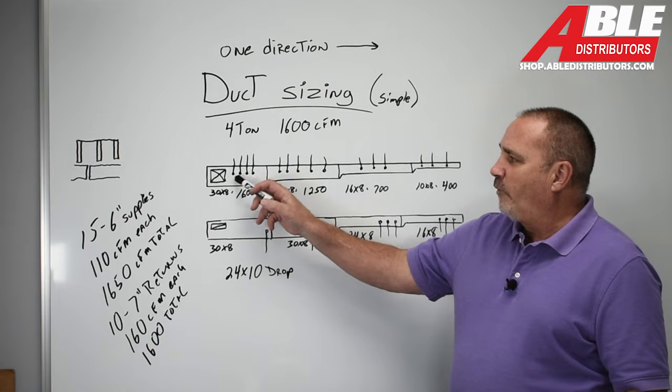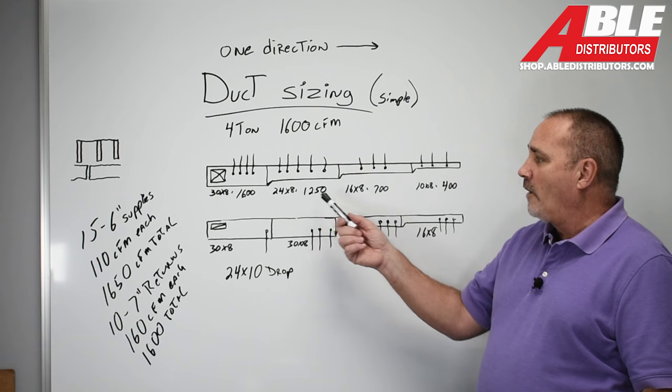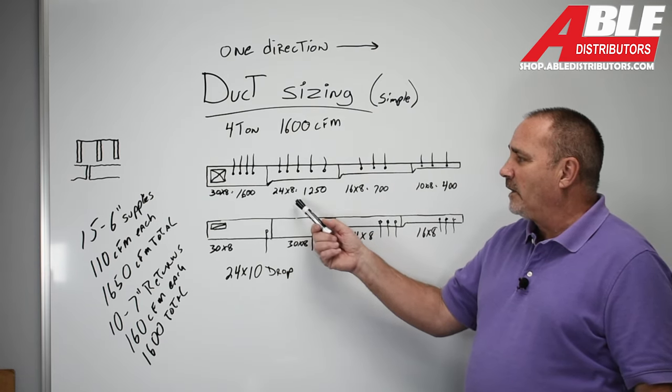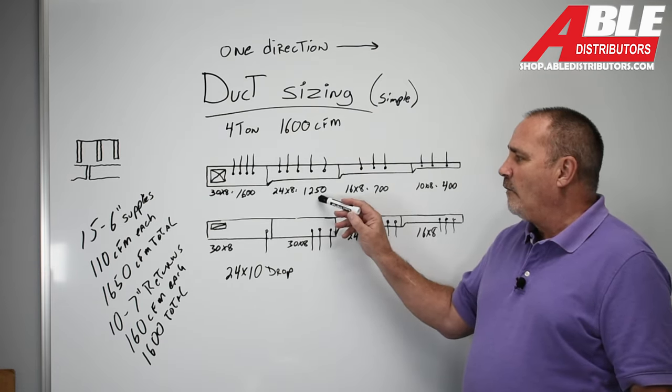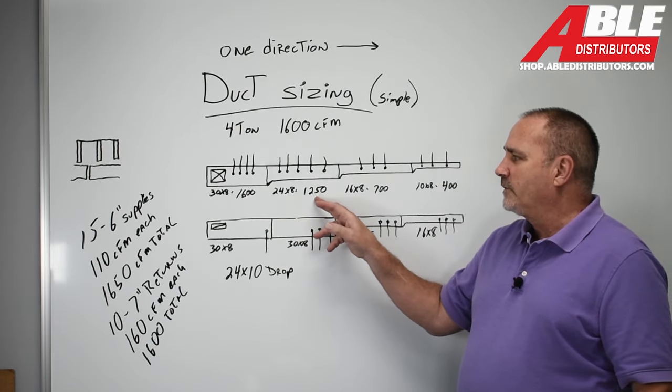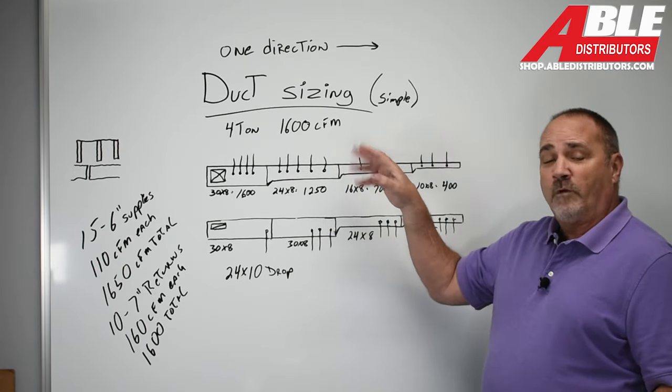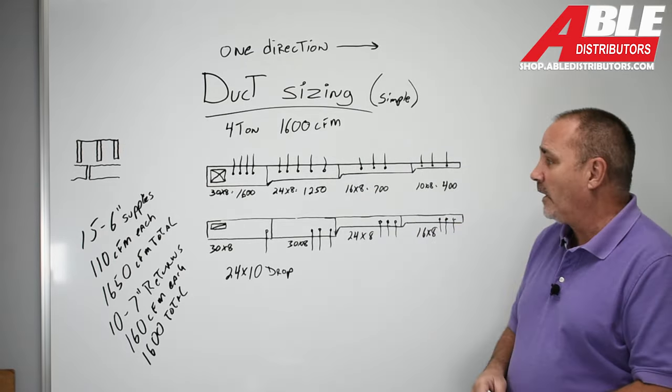So I took four off that first piece. That's roughly 440 CFM off. So the next piece I dropped down to 24 by 8. It's a little oversized because we took 440 off of that. So we're a little oversized, but 24 by 8 is good for 1,250. We took five more supplies off of that. That's 550 CFM.